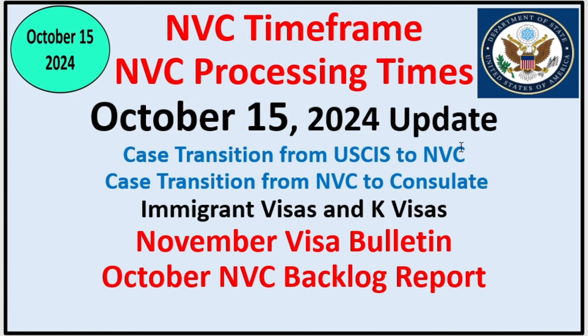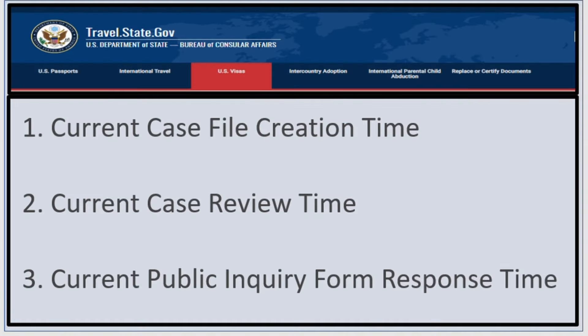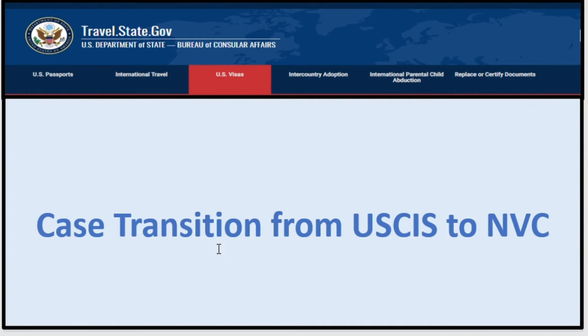There are three NVC processing time metrics. The first is current case by creation time. The second is current case review time. The third is current public inquiry form response time. The top two are crucial to your case — you must understand them. We will first define them and then give the processing times.